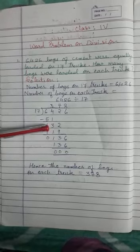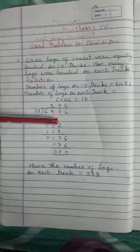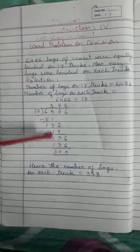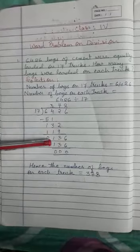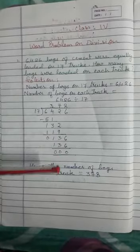Now we will subtract. 132 minus 119. Students, we will borrow 1, making it 12. 12 minus 9 is 3. Bring down 6 to get 136.